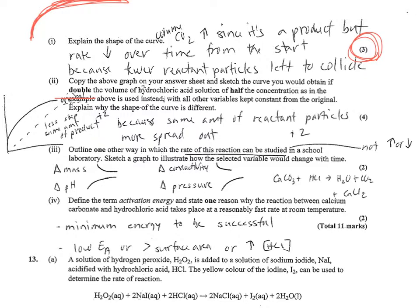Number four, define the term activation energy and state one reason why it's reasonably fast at room temperature. Activation energy is just the minimum energy for a successful collision to make product, have a reaction. Remember, activation energy and the energy of the particles are two different things. Activation energy is like the standard you have to reach.